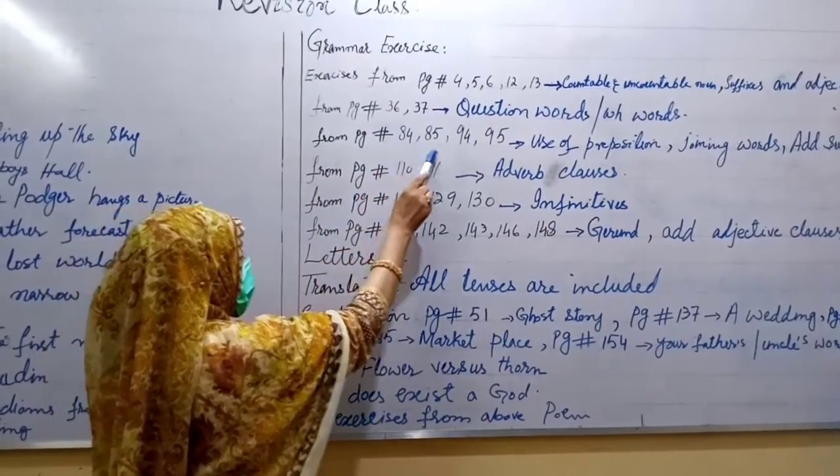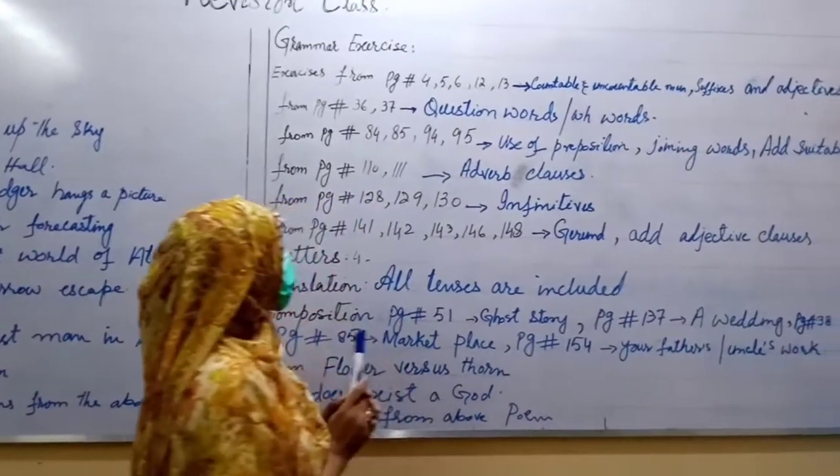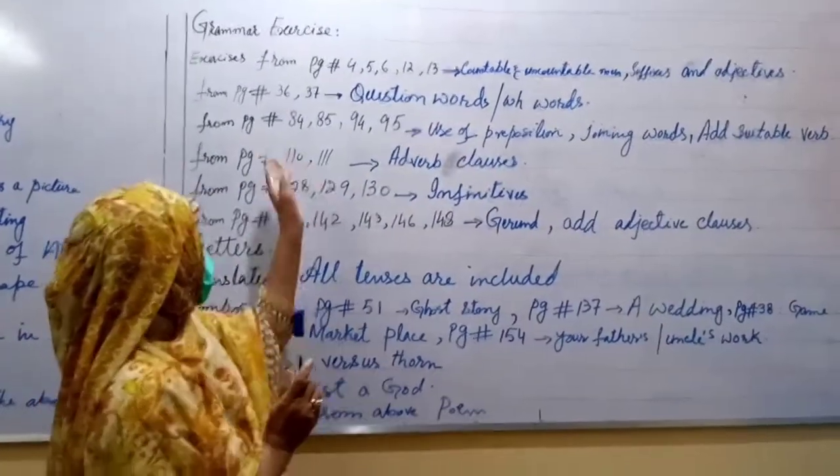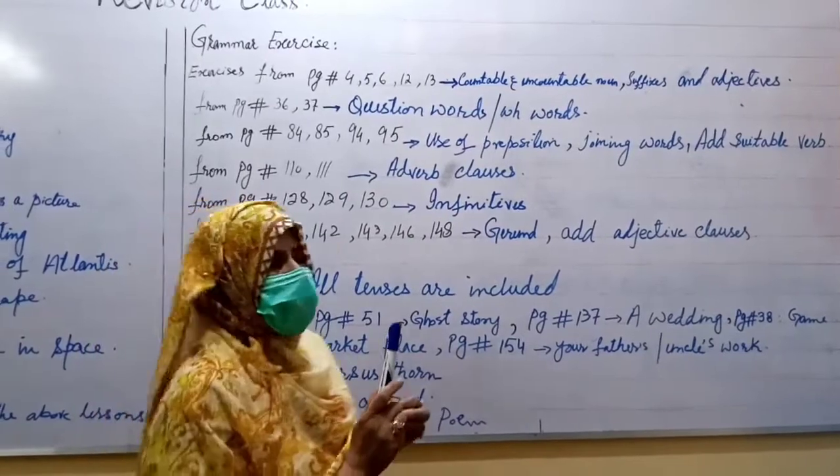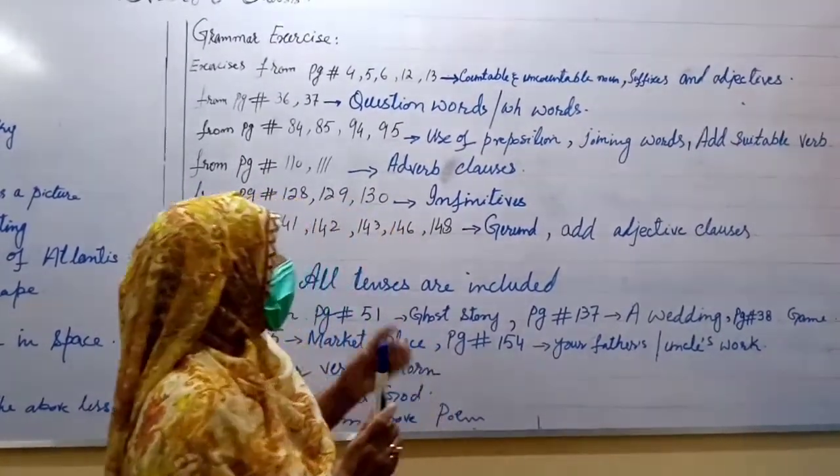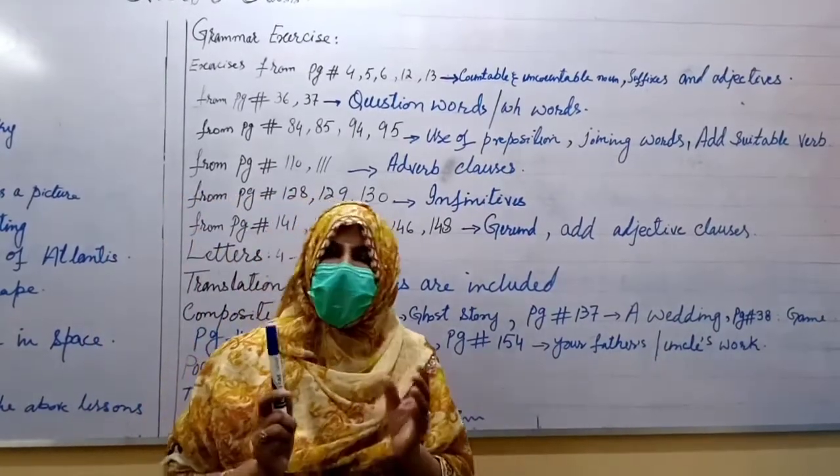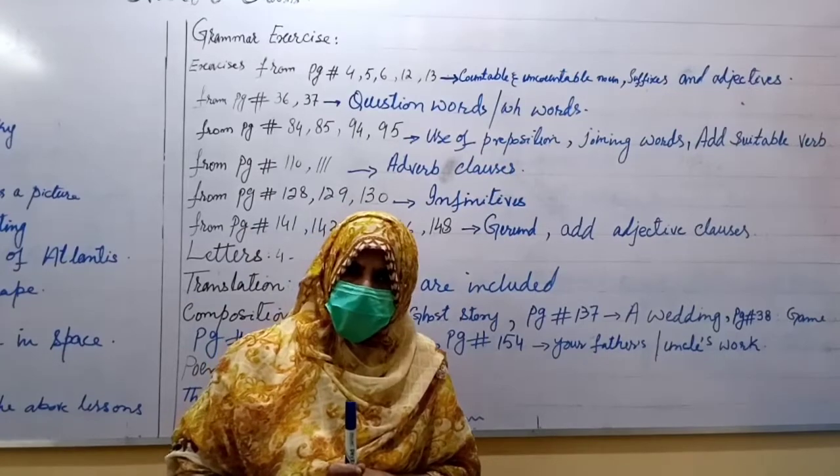Let's move towards the next page number 84, 85, 94, 95. In these exercises which is present in these pages, you have to use preposition to complete the sentences and join words and add suitable forms of verb. Clear?